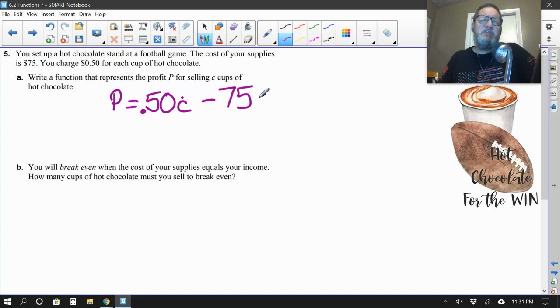Okay, do you see why I didn't minus $75? That's because we have to take away from the money we have coming in how much it costs to buy the materials, the supplies. Yeah, because profit is actually the amount of money you make. A profit is the amount of money you make, so selling the cups of hot chocolate at $0.50 each, minus your expenses. All right. So let's see. Write a function that represents profit for selling C cups of hot chocolate.